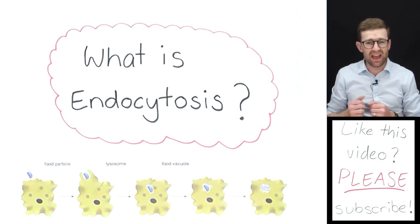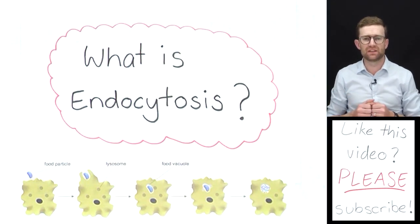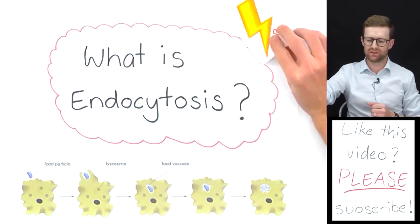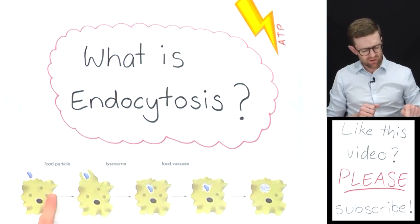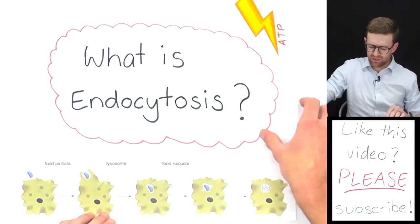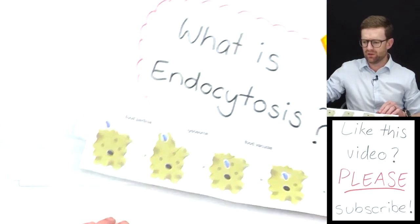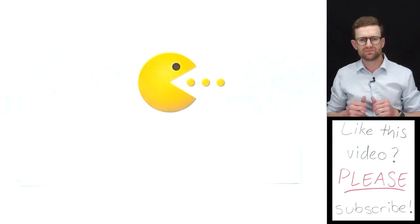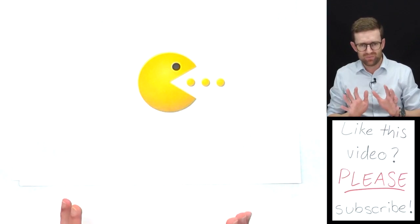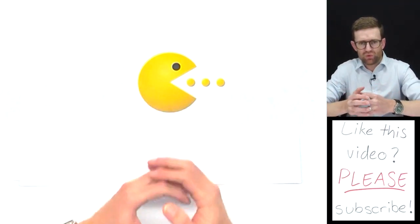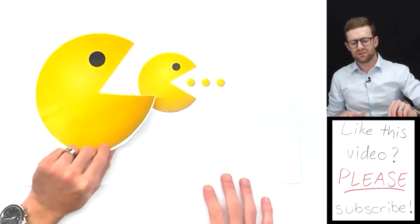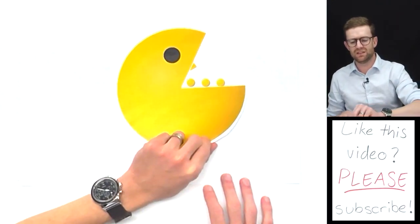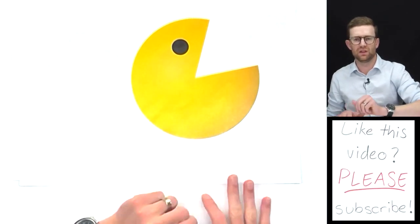It's one of the active processes for moving things inside of cells, and so that means it requires energy. If you're looking at this diagram and you're thinking that it kind of reminds you of Pac-Man, then yeah, there's some similarities there. It's the way the cell engulfs and encloses itself around the outside of particles, but not just small things—sometimes entire cells can be engulfed through endocytosis.